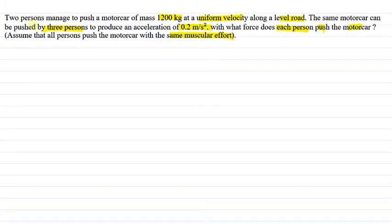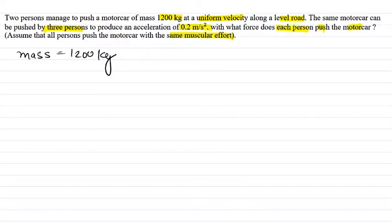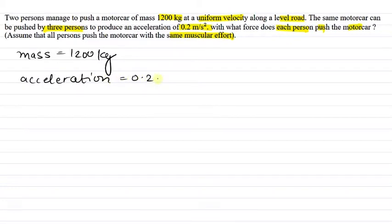So here we have two persons pushing a motor car of mass 1200 kg at uniform velocity. Now the same motor car is being pushed by three people, producing an acceleration of 0.2 meter per second square.